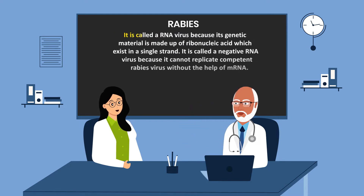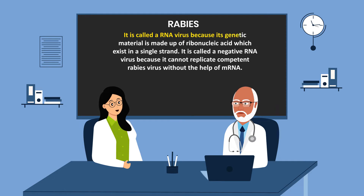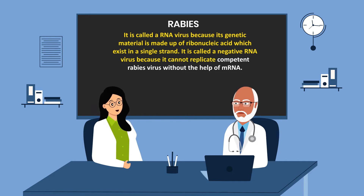It is called an RNA virus because its genetic material is made up of ribonucleic acid, which exists in a single strand. It is called a negative RNA virus because it cannot replicate competent rabies virus without the help of messenger RNA.